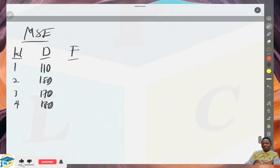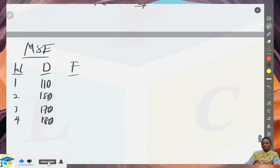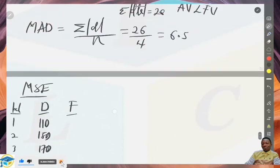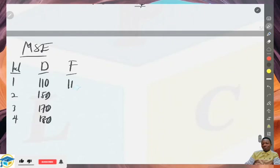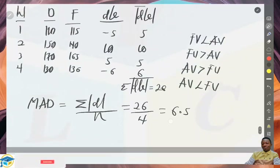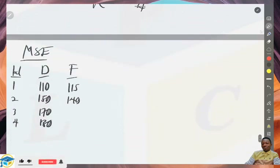For week 1 through 4, the actual demand values are 110, 150, 170, and 130. The forecast values are 115, 140, 165, and 136. So here we'll find our error or deviation.